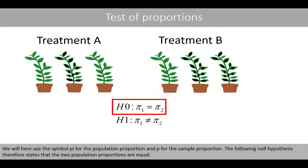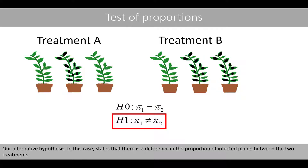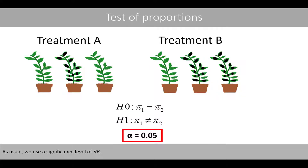We will use the symbol pi for the population proportion and p for the sample proportion. The null hypothesis states that the two population proportions are equal — in other words, that treatment A and B have the same effect. Our alternative hypothesis states that there is a difference in the proportion of infected plants between the two treatments. As usual, we use a significance level of 5%.